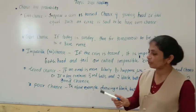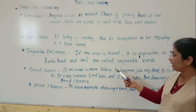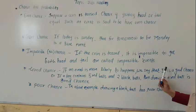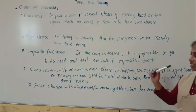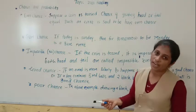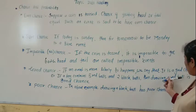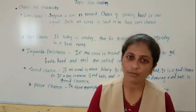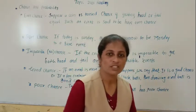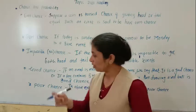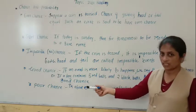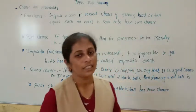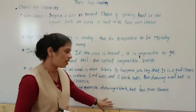Next is good chance. If an event is more likely to happen, we say that it is a good chance. Suppose a bag contains five red balls and two black balls — drawing a red ball is a good chance. And what is meant by poor chance? In this same example, drawing a black ball has a poor chance.